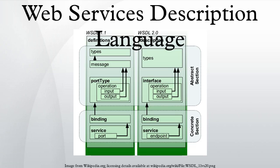WSDL describes services as collections of network endpoints, or ports. The WSDL specification provides an XML format for documents for this purpose. The abstract definitions of ports and messages are separated from their concrete use or instance, allowing the reuse of these definitions. A port is defined by associating a network address with a reusable binding, and a collection of ports defines a service.